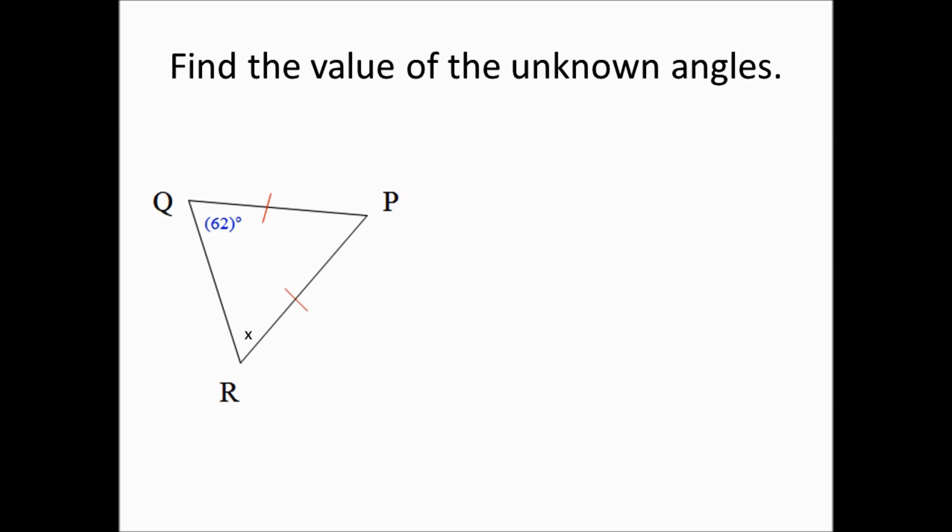Here's another example of the base angles theorem. Notice that we have two sides which are congruent to each other. Therefore, due to the base angles theorem, the angles opposite those two congruent sides are also congruent to each other. One angle is 62 degrees and the other is X, so X equals 62.